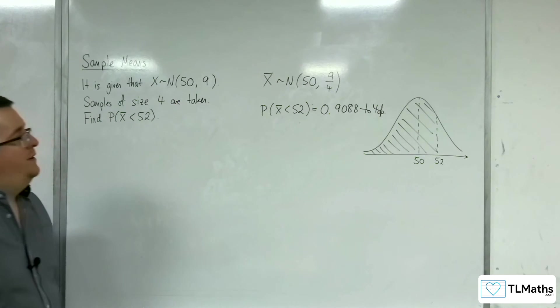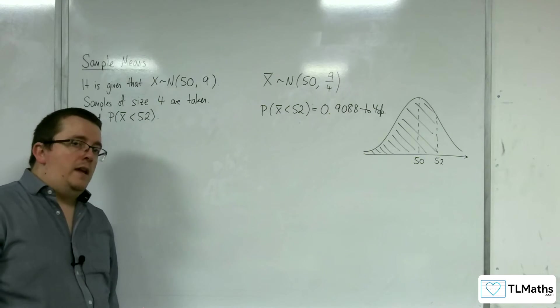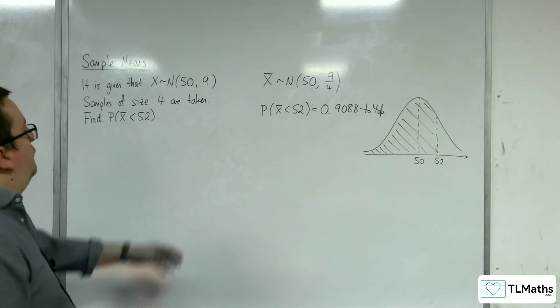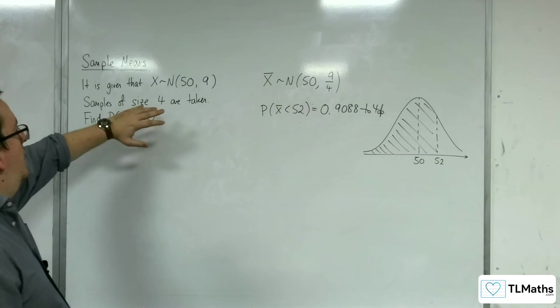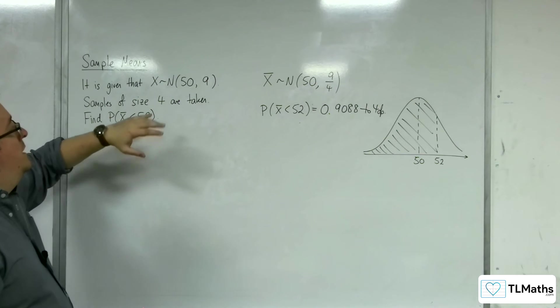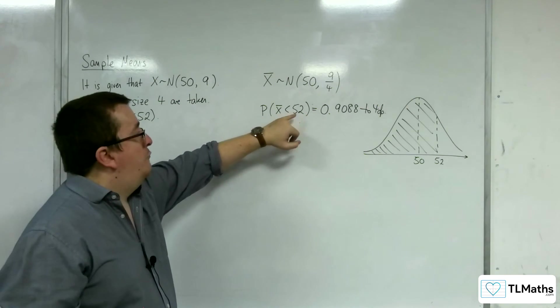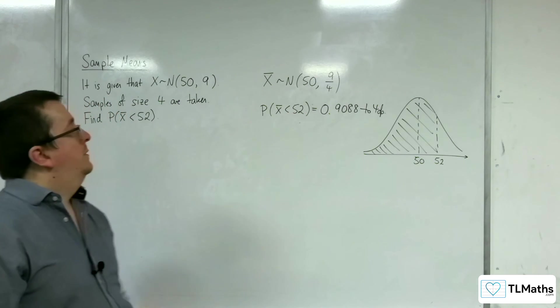And that should really make sense that it's quite a high probability that you're going to find an average. You're going to take a random sample of size 4 and their average to be less than 52.